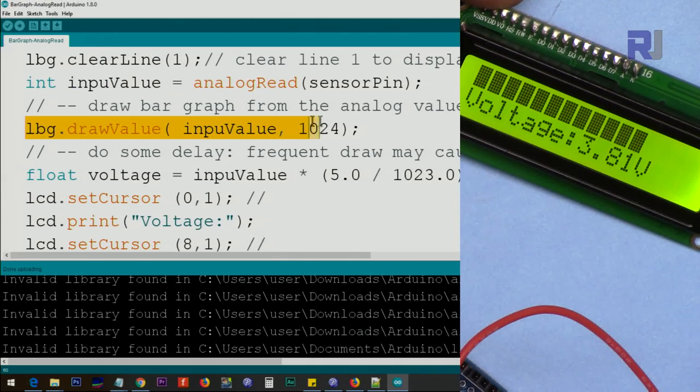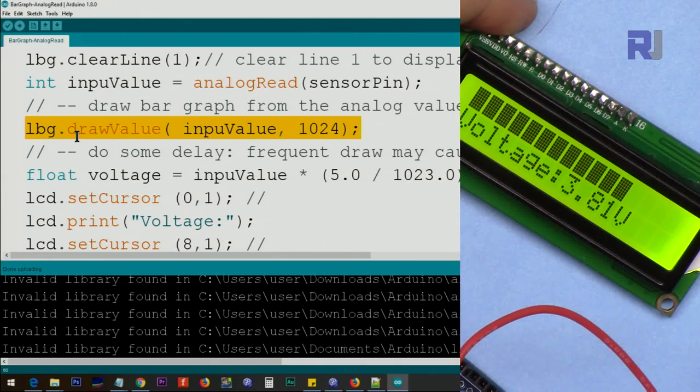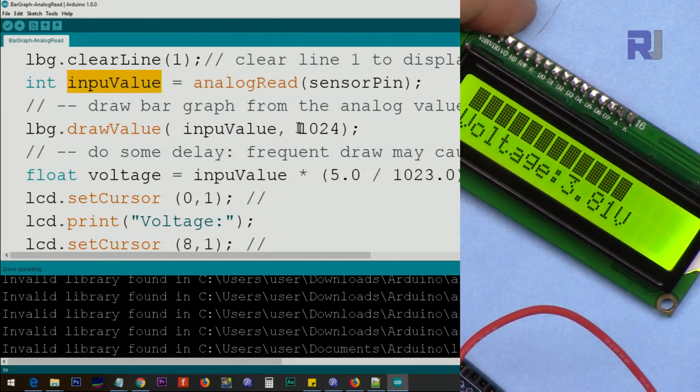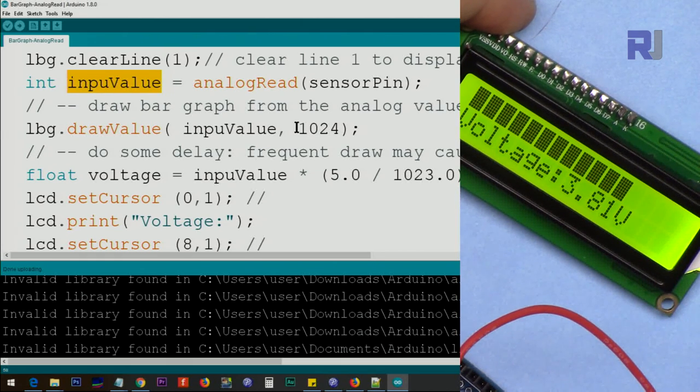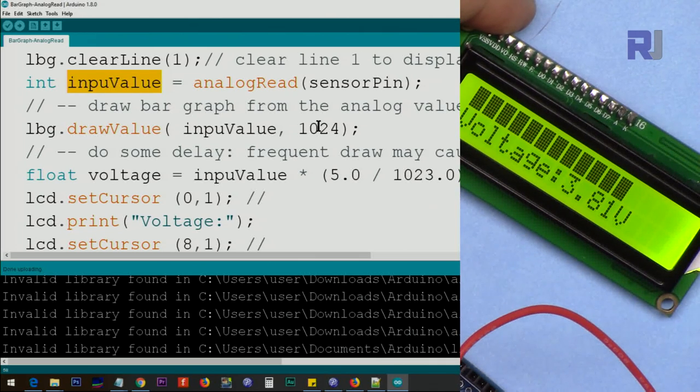This is drawing the bar graph for us, lbg.drawValue. Then input value, whatever value we have, and we mentioned that this has to be with respect to 1024 points, and it will fill up the screen. You don't have to worry about it.